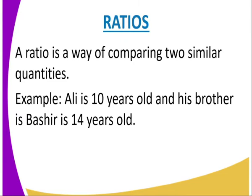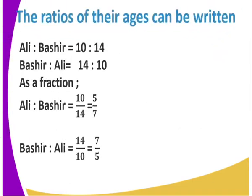We are now going to look at the subtopic on ratios, whereby a ratio is a way of comparing two similar quantities. For example, Ali is 10 years old and his brother Bashir is 14 years old. The ratio of Ali to Bashir is 10 to 14, and Bashir to Ali is 14 to 10. As a fraction, Ali to Bashir is 10/14, which simplifies by dividing both by 2 to give 5 over 7. So Bashir's age to Ali's age is 7 to 5, and Ali's age to Bashir's age is 5 to 7.